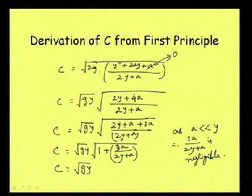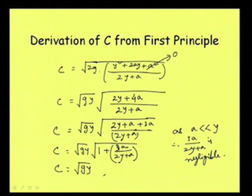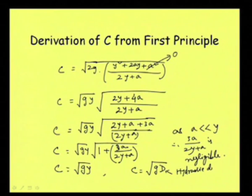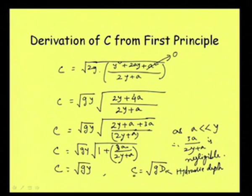For a non-rectangular channel, y does not represent things properly, so we write c = √(gD), where D is the hydraulic depth. For a rectangular channel, D equals y, but for a trapezoidal channel it is A/T. Using this hydraulic depth expression we can get the value of c.